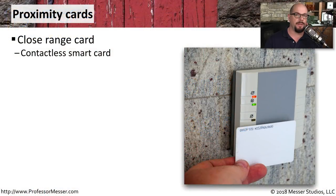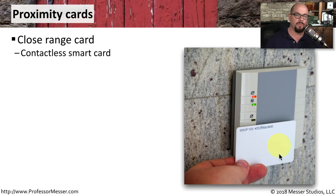Proximity cards are commonly used to gain access to doors or door locks. You can see that by moving the card close to the proximity reader, you're able to read the information on the card, and then the system can either allow or disallow access through that lock.